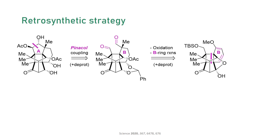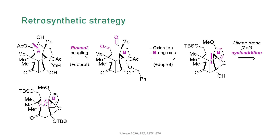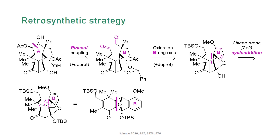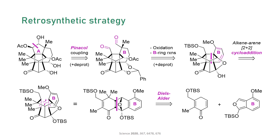Much more important is the following realization: by going through this cyclohexadiene, the team elegantly enabled the disconnection of the cyclobutane core through an intramolecular dearomative 2+2 cycloaddition. 2+2 photoadditions are one of the most commonly used and robust methods for cyclobutane synthesis. If we now redraw the required starting material in a simpler representation, we realize that we could access it through a Diels-Alder cycloaddition of two simpler building blocks.